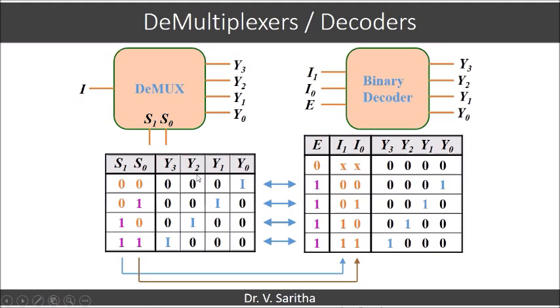If you see the function table, when S1 S0 is 00, y0 is I. Here when E equals 1 and I1 I0 are 00, y0 is 1. So if I equals 1 here, y0 is 1. If I equals 0, all outputs are 0.